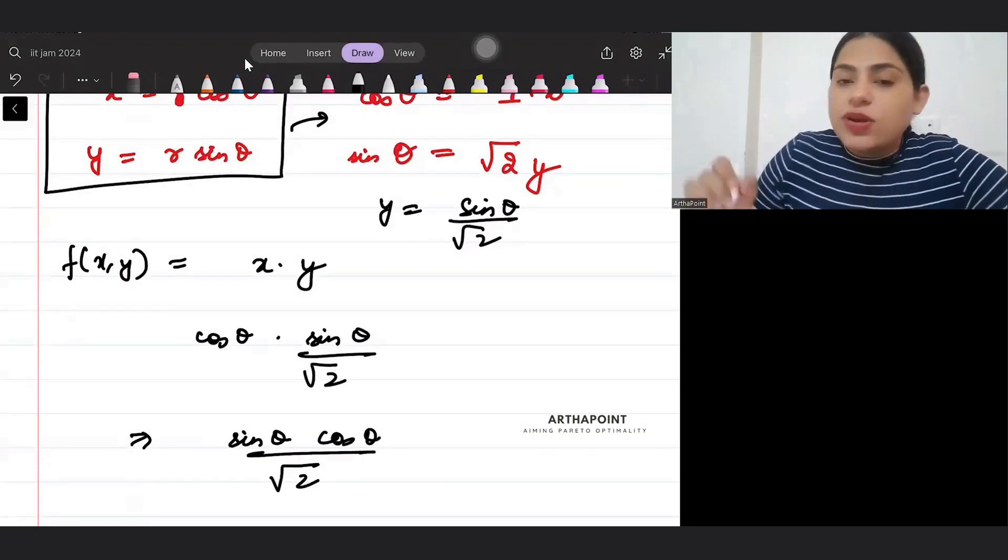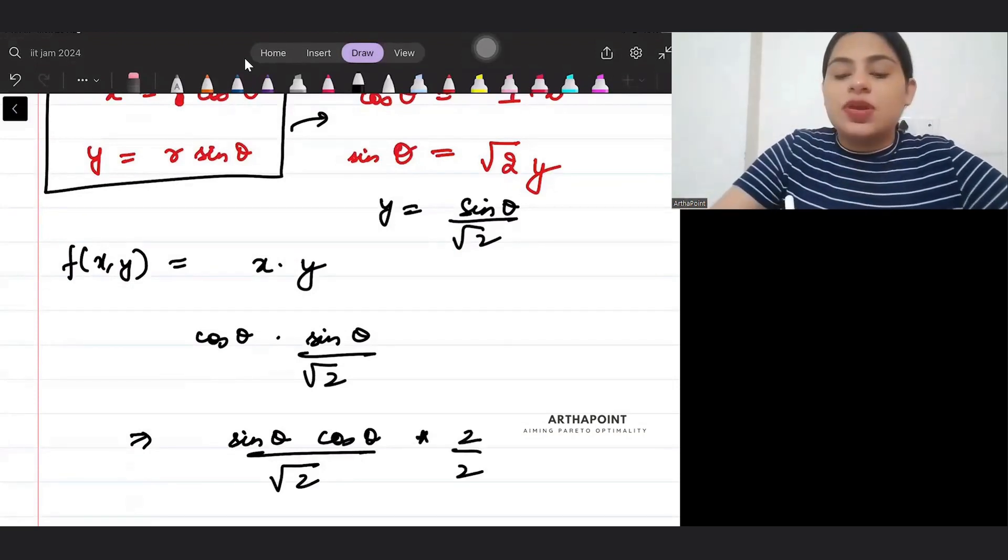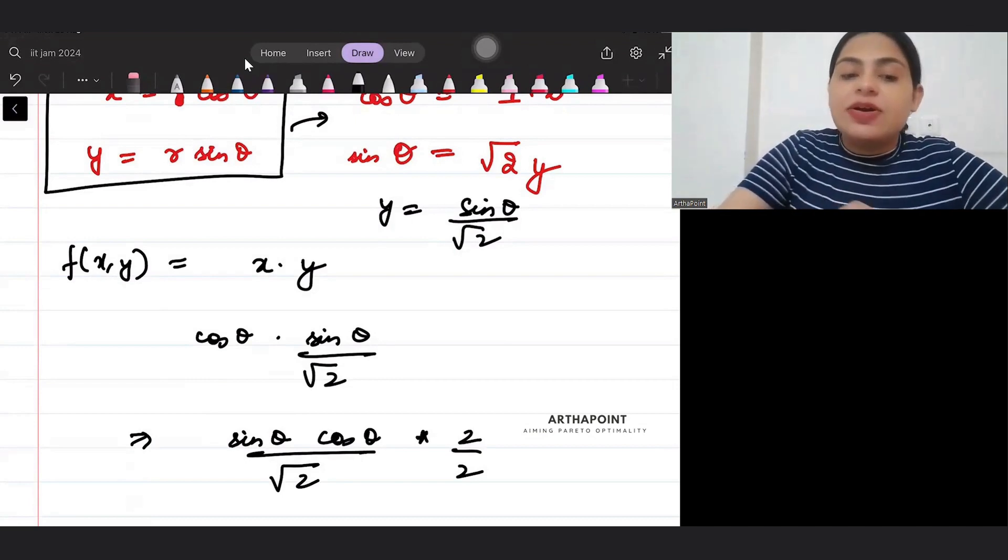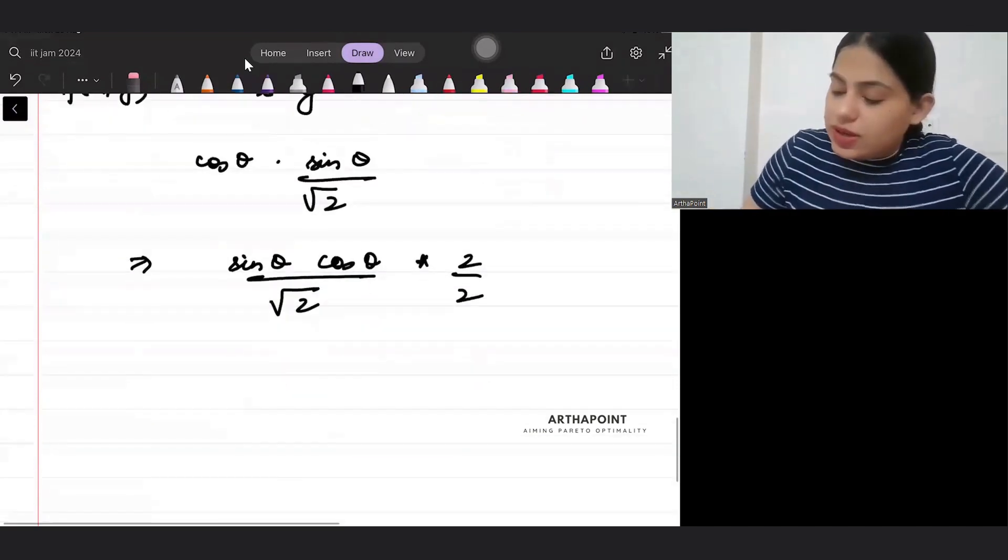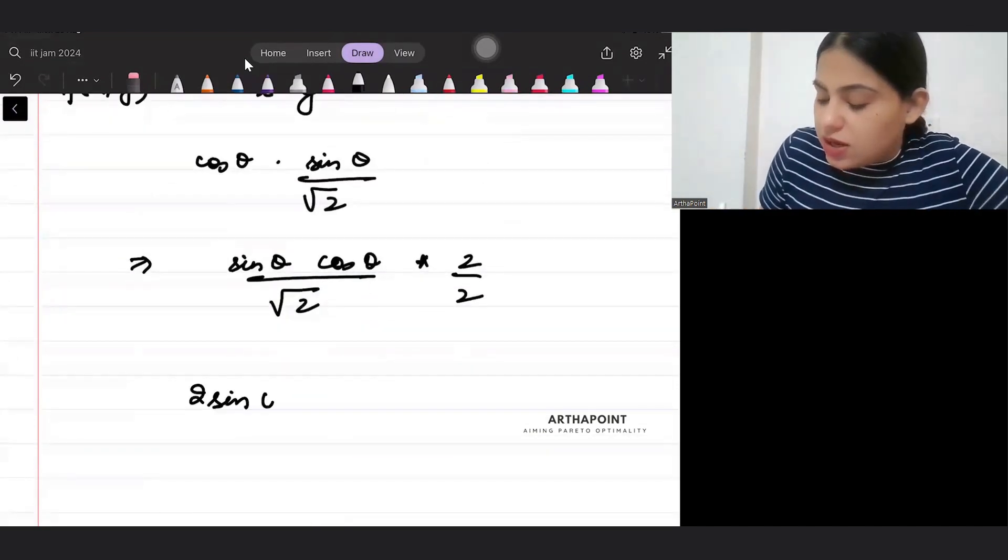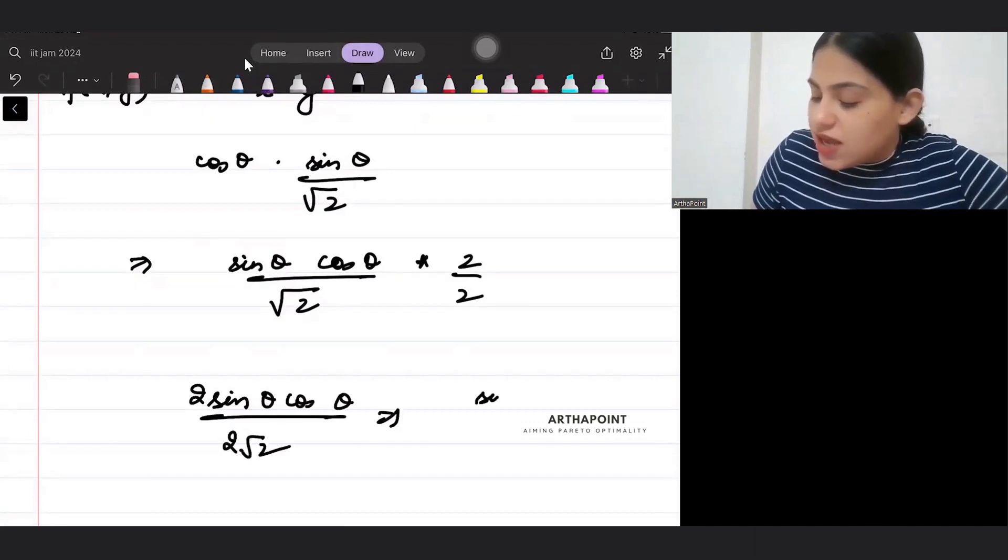Now what can I do? I can multiply and divide by 2. So if I multiply and divide by 2, what will I get? I will get 2 sin theta cos theta by 2 root 2, so sin 2 theta by 2 root 2.